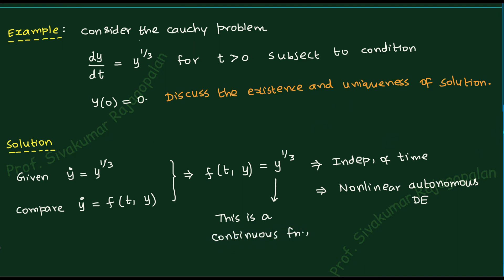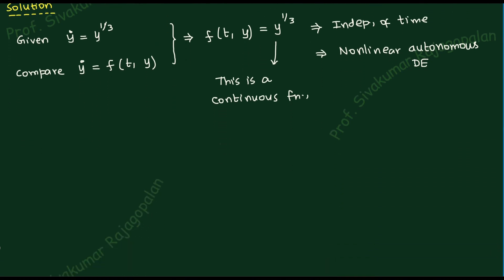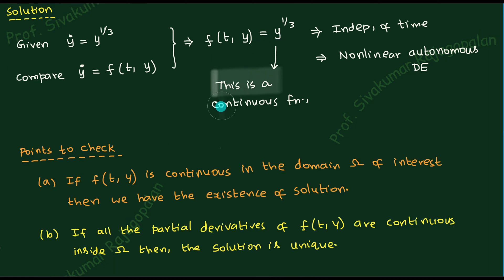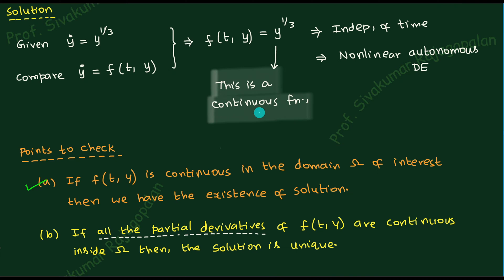Now we have to discuss continuity. This particular function f(t, y) = y^(1/3) is a continuous function. The first condition is satisfied — I'll put a tick here. The conclusion is that the existence of the solution is guaranteed. Now we calculate the first-order partial derivative.